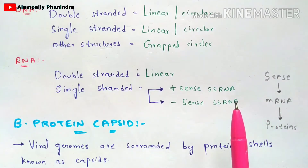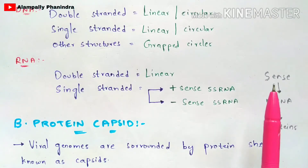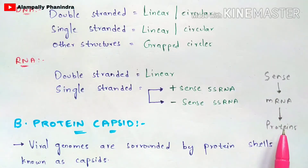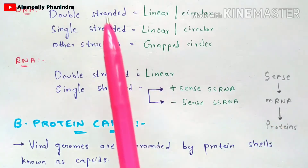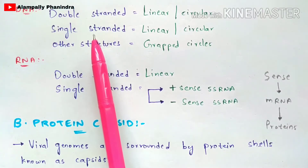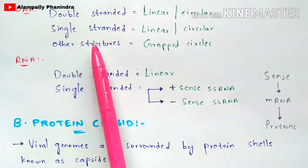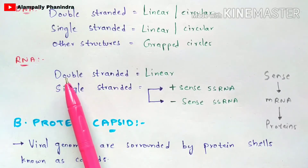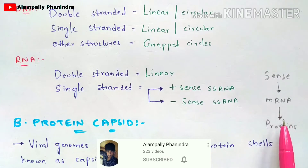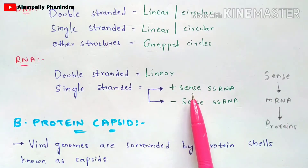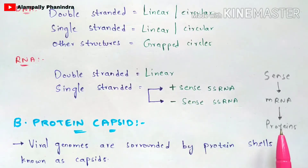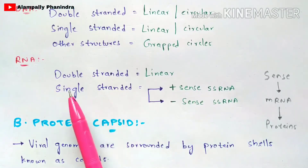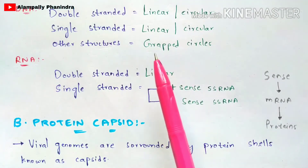Transcription is the process where DNA gets converted to mRNA. If the viral genome is RNA, it can directly undergo translation to form proteins. If the virus genome is DNA, it must first undergo transcription to form mRNA and then translation to form proteins. Positive-sense and negative-sense are the two types of single-stranded RNA.